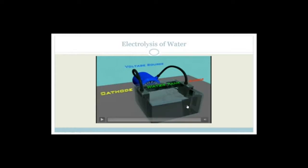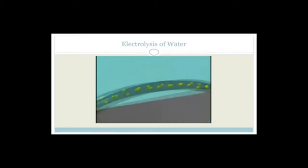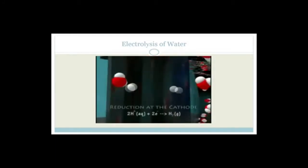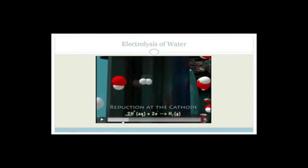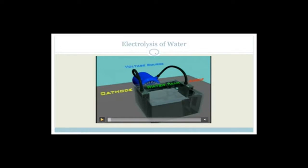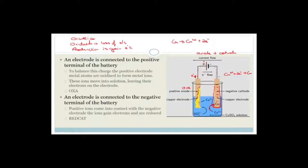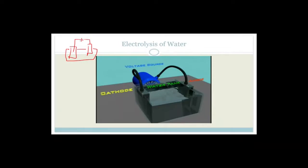Now let's look at the electrolysis of water. There's no sound on this video, so I'll explain it. So you've got a cathode and an anode, both submerged, with a voltage supply. This is the equivalent of having two electrode sticks in a beaker full of water. The cathode is connected to the negative terminal - the small side - and this is the anode connected to the positive - the big side.